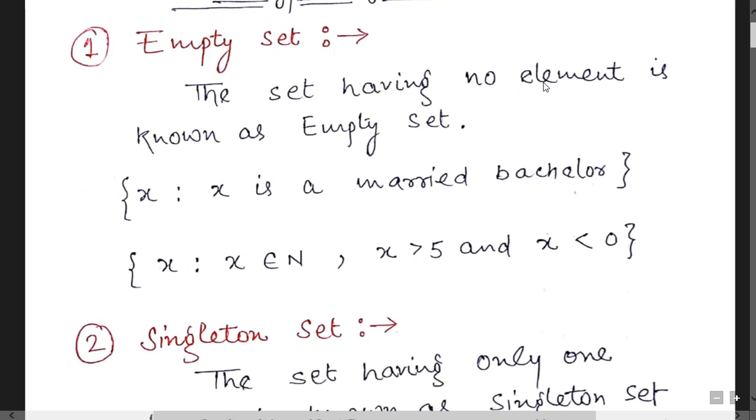First is empty set. The set having no element is known as empty set. You can write example x such that x is a married bachelor, or you can write x greater than 5 and x less than 0. Basically one number is greater than 5 and the second is a negative number. It's not possible, that's why the answer is empty and you can represent this set by symbol phi.